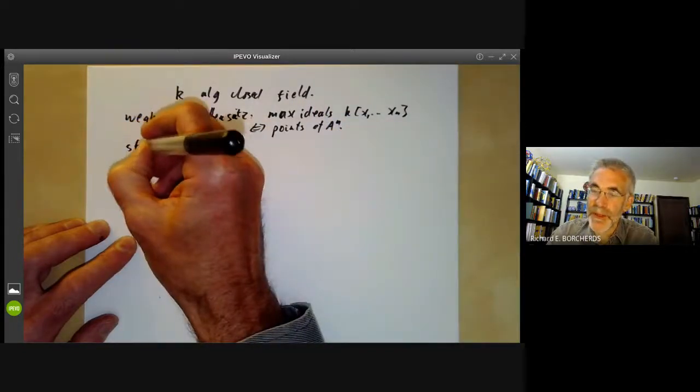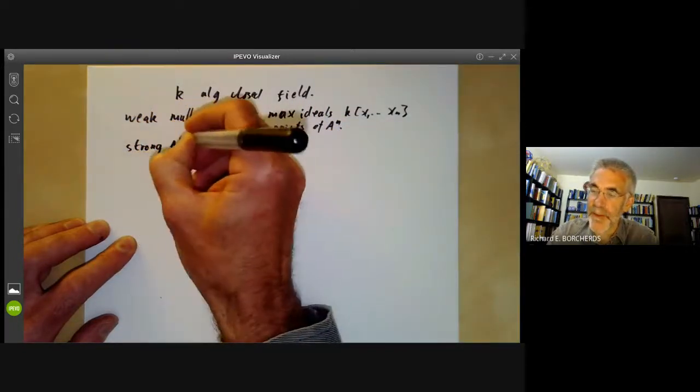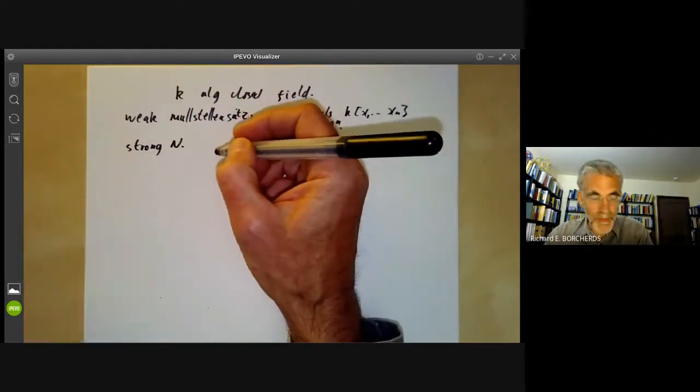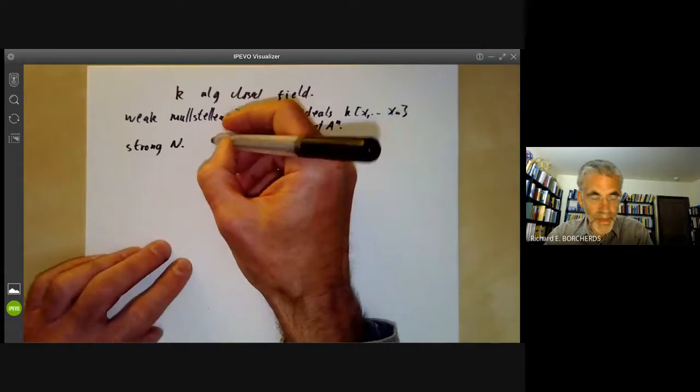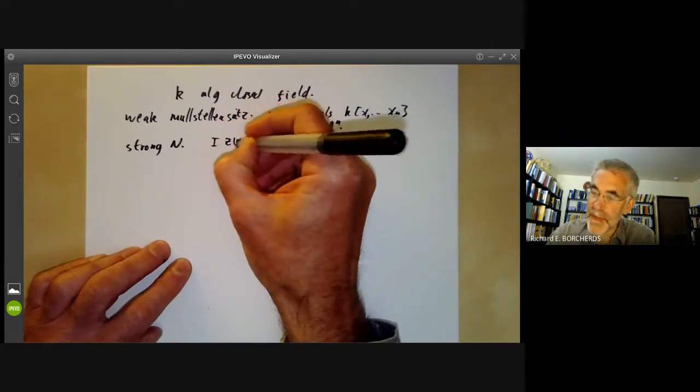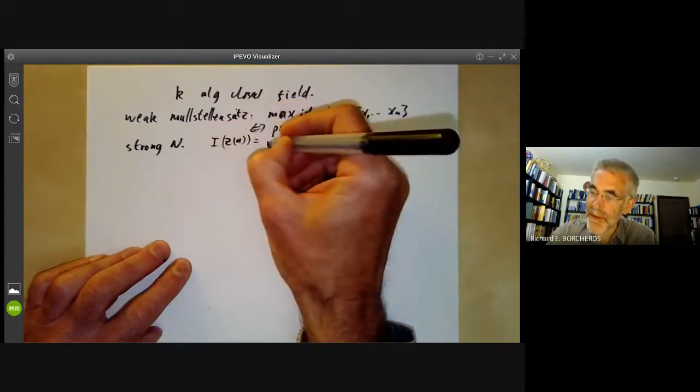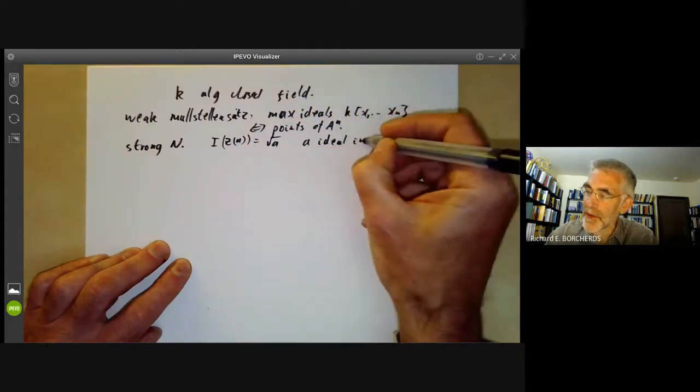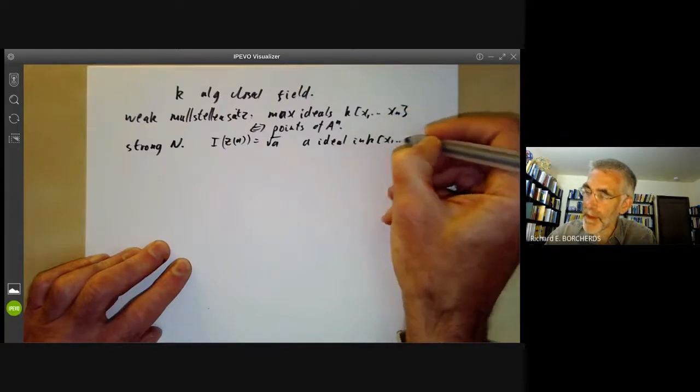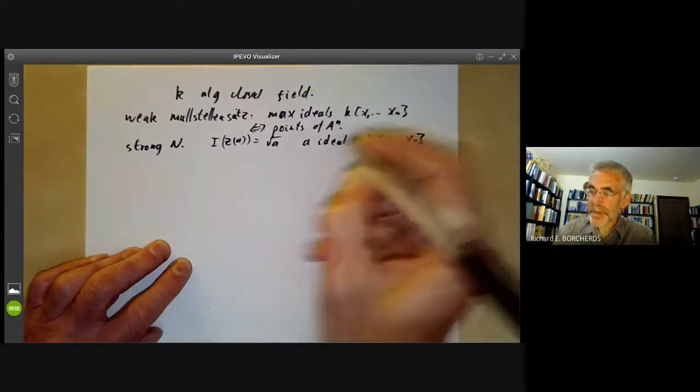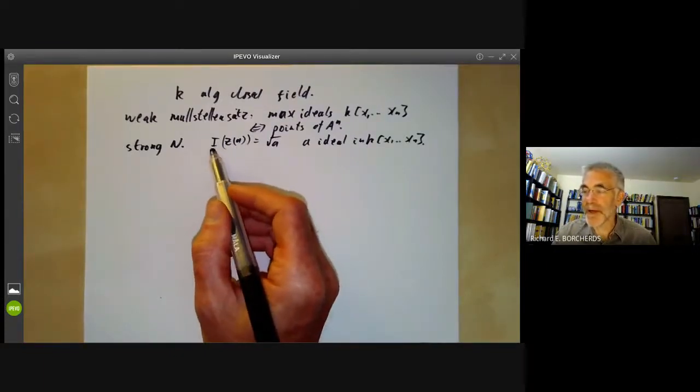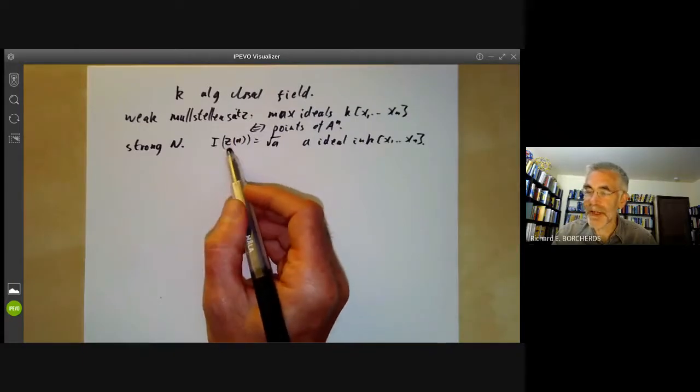And we want to deduce the Strong Nullstellensatz which says that I(Z(a)) is the radical of a for a an ideal in the polynomial ring. So you remember Z(a) was the set of zeros of the ideal a and I(a) was the ideal corresponding to this algebraic set.